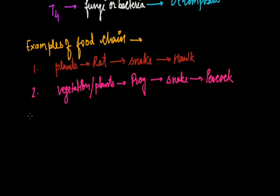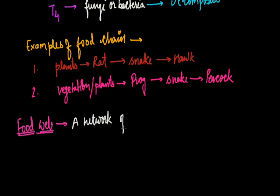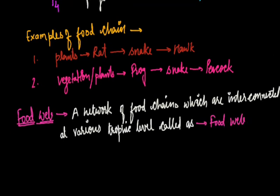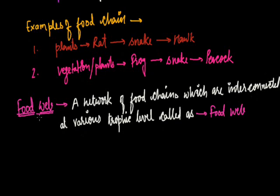The next topic after food chain is food web. In nature, food chains are not isolated sequences but are rather interconnected with one another — they are not separated from each other but interconnected. So food web is defined as a network of food chains which are interconnected at various trophic levels. Because of the food web, there is a large number of feeding connections among different organisms of biotic communities.